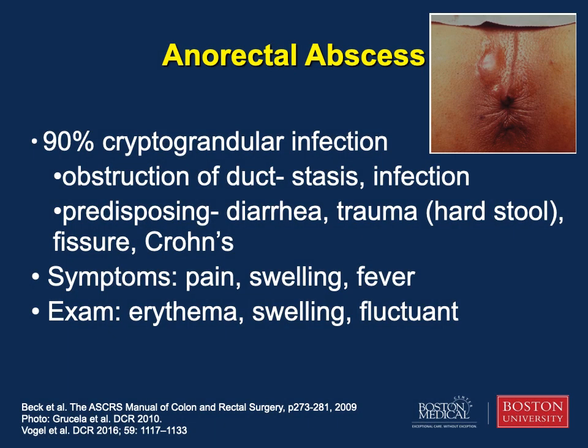The etiology of anorectal abscess is that the abscess results from obstruction of anal crypts or glands, which leads to stasis and often infection. The diagnosis of anorectal abscess is based on the patient's history and physical examination. Perianal pain and swelling are common with superficial abscess, whereas drainage and fever occur less often. Inspection of the anorectal area and perineum may reveal superficial erythema and fluctuance with tenderness to palpation, as shown in the photo in this slide.